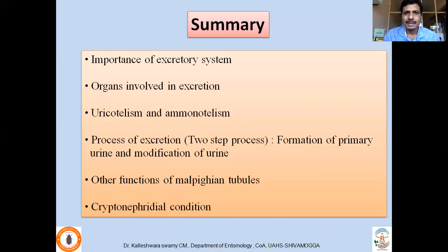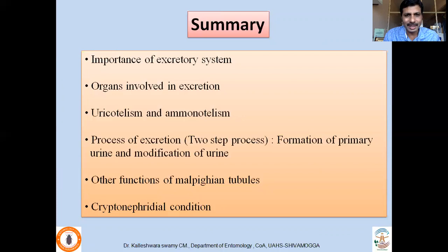In this class we discussed the importance of the excretory system; organs involved in excretion — chief excretory organs are Malpighian tubules, others include the rectum, nephrocytes, enocytes, and integument; the contents of excreta and whether organisms are uricotelic or ammonotelic; the two-step process of excretion — formation of primary urine and selective modification; other functions of Malpighian tubules in different insect groups; and finally the cryptonephridial condition.